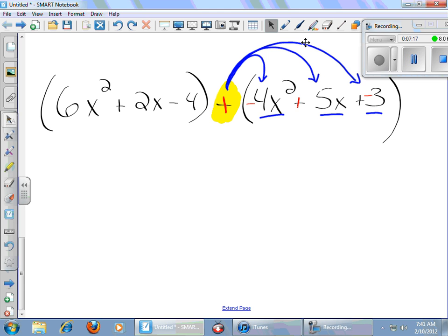Distributing the negative changes the sign of everything within the quantity. Now, I'm ready to go ahead and do my highlighting and combine the like terms. So I've got a positive 6x squared here, and I've got a negative 4x squared. Now, before you get hung up on this, this is so simple. Please don't make this hard.